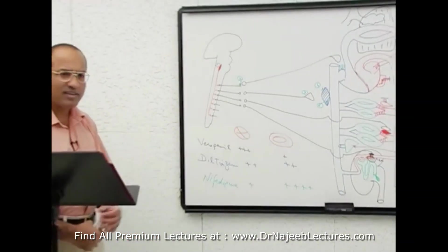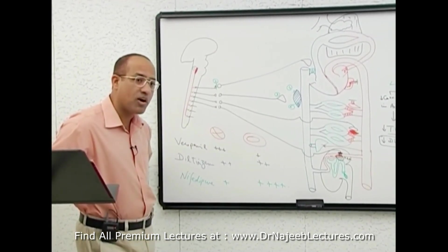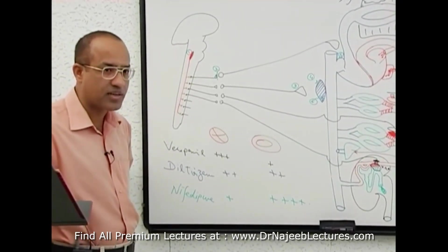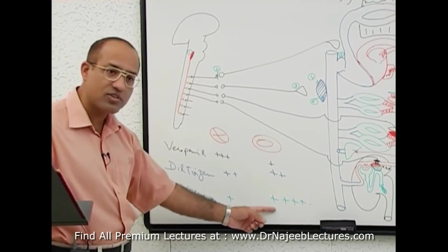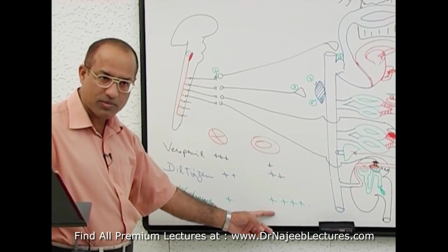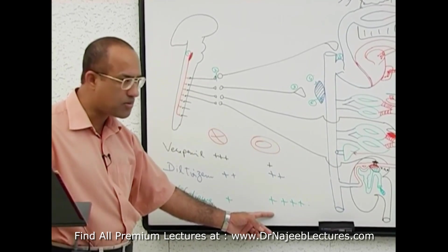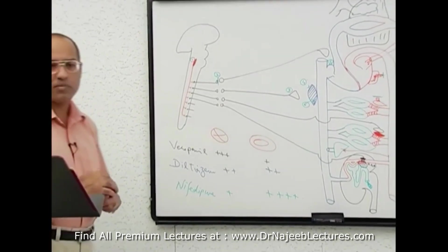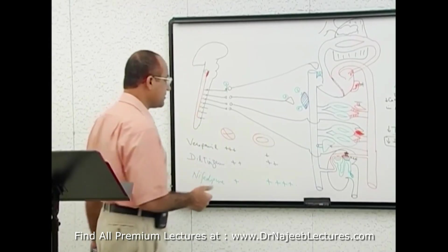One important clinical point: if you are giving calcium channel blockers and you do not want to produce negative inotropic or negative chronotropic action, then you will use nifedipine, because it is a calcium channel blocker with minimum action on the heart. These are the key points about the mechanism of action of calcium channel blockers as antihypertensives.